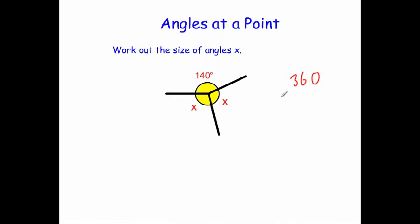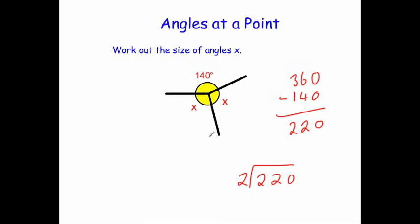So we've got 360 and we're going to take away 140 degrees. 0 take away 0 is 0, 6 take away 4 is 2, and 3 take away 1 is 2. So we've got 140 here, and these two angles add up to 220 degrees altogether. Now if we divide 220 by 2: 2 goes into 2 once, 2 goes into 2 once, and 2 goes into 0 zero times — so 220 divided by 2 gives us 110. Each of the angles is 110 degrees, so X is 110.